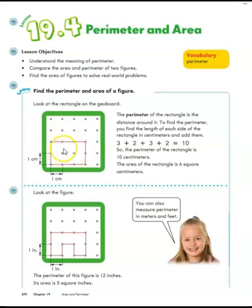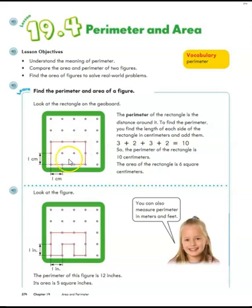So our area is six square centimeters. We can check that by counting the squares: one, two, three, four, five, six. So that's area. Perimeter is the outside distance, which is 10 centimeters.